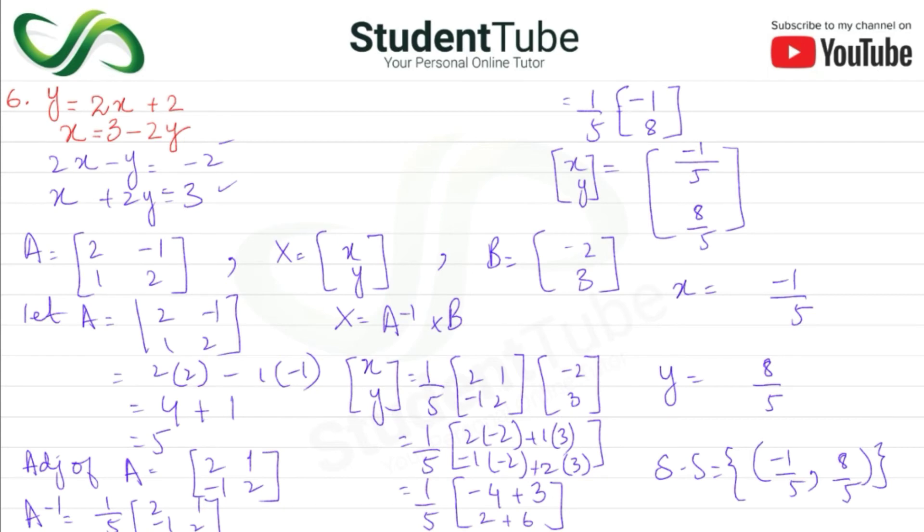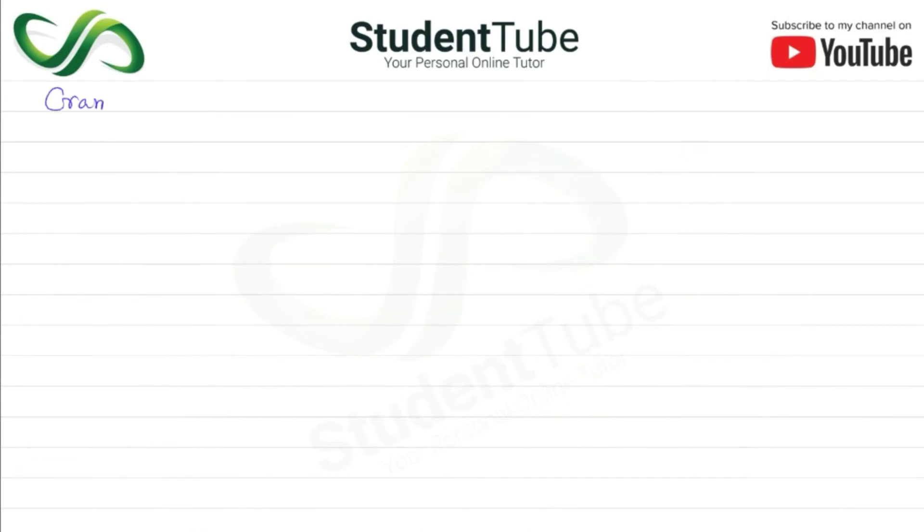Now we'll solve using Cramer's rule. Let A equals [2, -1; 1, 2]. So 2 times 2 minus 1 times -1: 4 minus minus plus 1 equals 5.